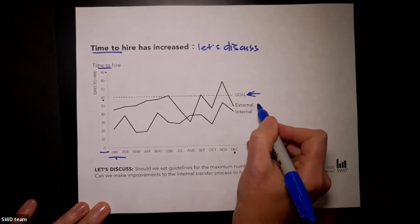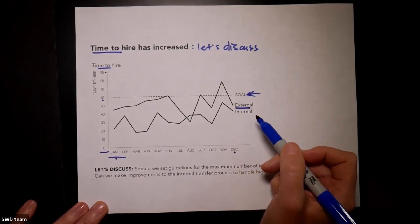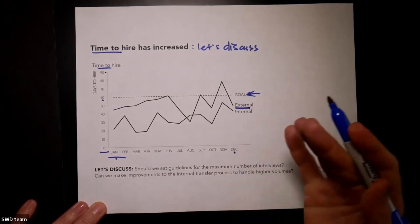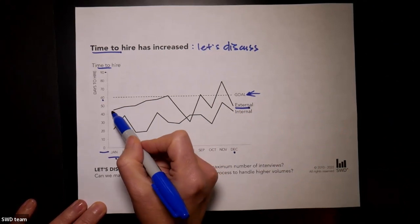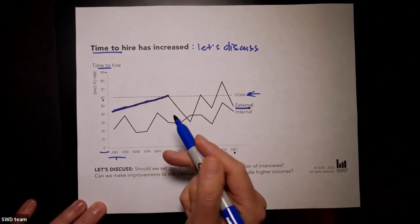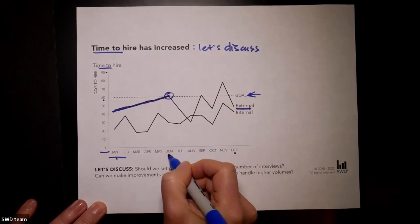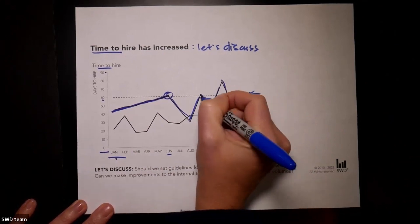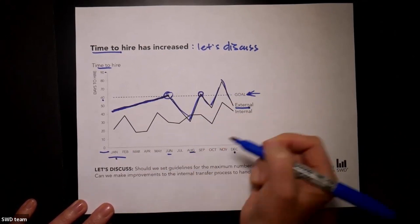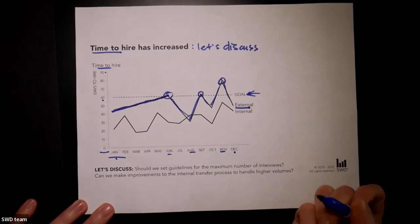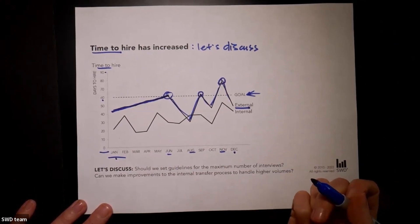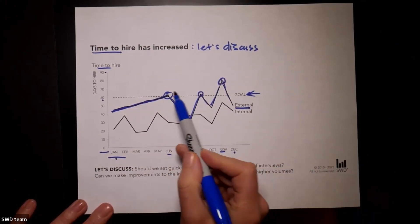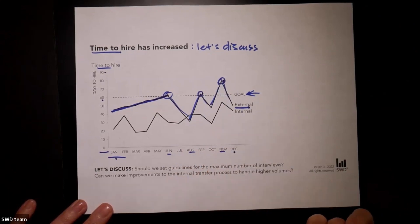We look first at our external hires — people who are being hired from the outside. First half of the year we see that mostly below goal, but generally increasing, above goal in June. And then it's been pretty noisy the second half of the year, above goal in August and again in November. It turns out when we dig into the data, months having higher time to hire typically have candidates who had more interviews, so that may be something worth discussing.